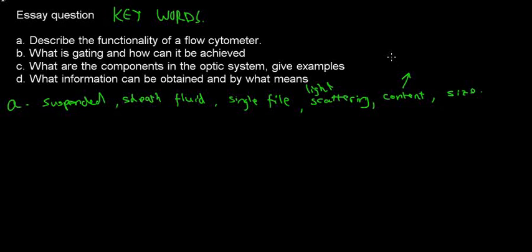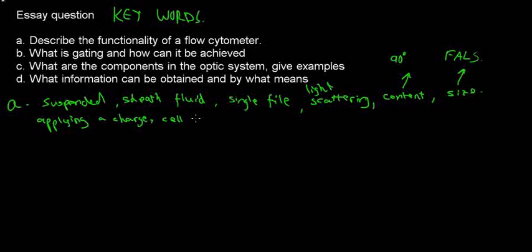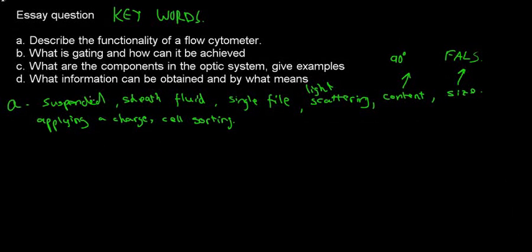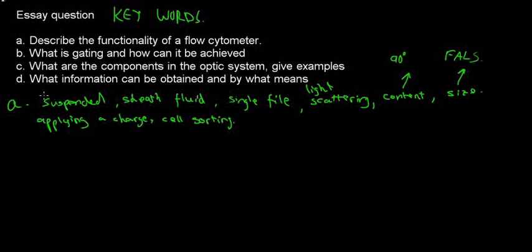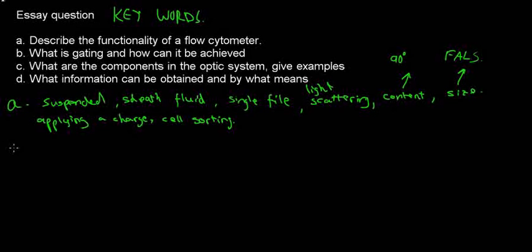The content comes from the 90-degree light scattering or the fluorescence light scattering, and the size is from the forward angle light scattering. I would also say something about the gating and that we can sort cells by the gating mechanisms or by applying a charge, which enables cell sorting. These are really the key phrases I would use, made to sound a little more academic.